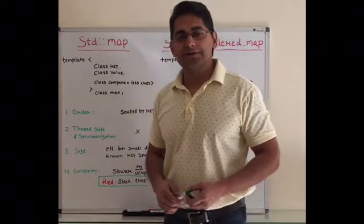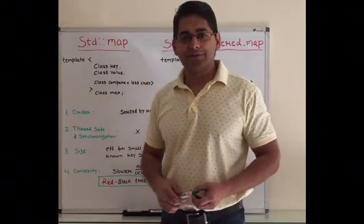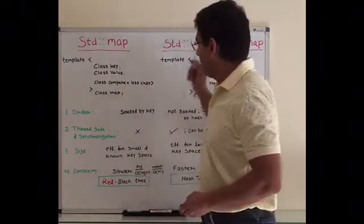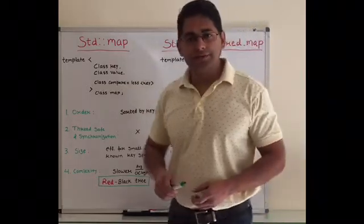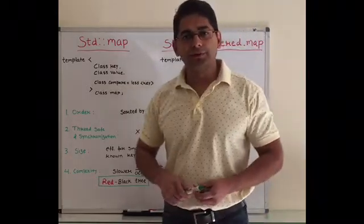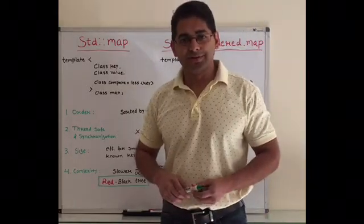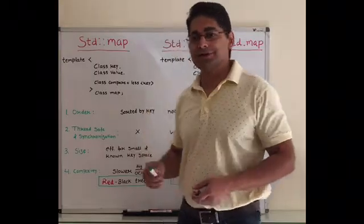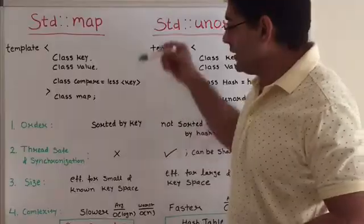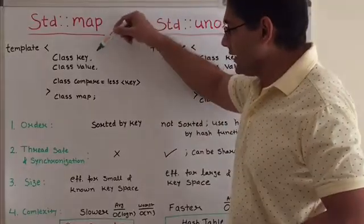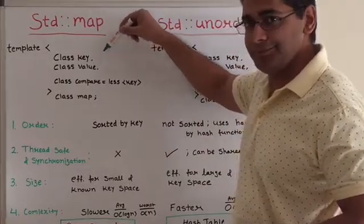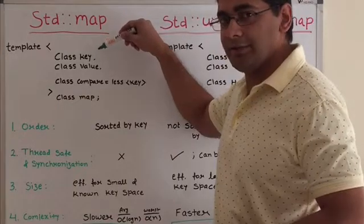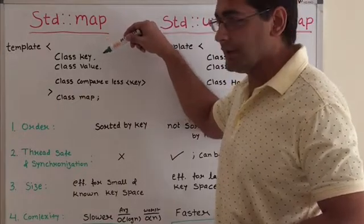Hi, I am Devinderang Rade. In this video, I am going to cover some differences between map and unordered map. As we know that both are associative containers that store elements formed by the combination of a key and its mapped value. The key is used to uniquely identify the element in the container.